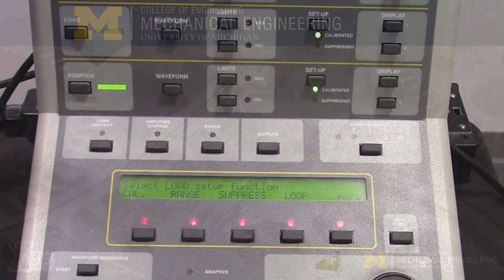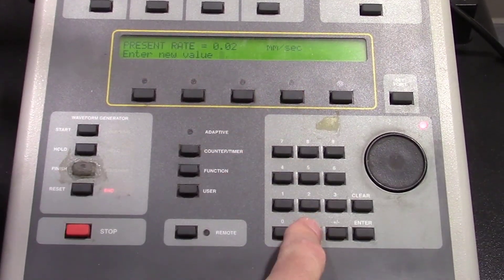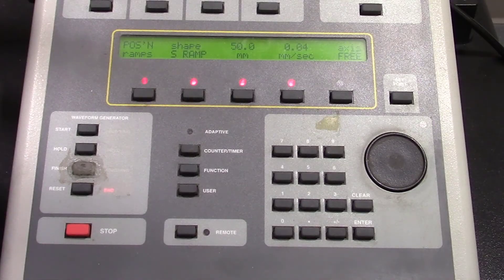To change the RAM speed, press the waveform button in the position row. On the lower console, press the soft key for millimeters per second and enter the desired speed using the numeric pad.